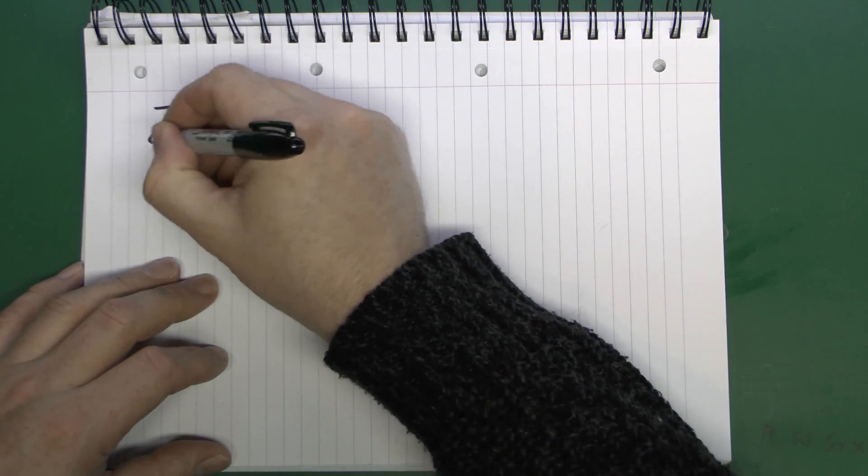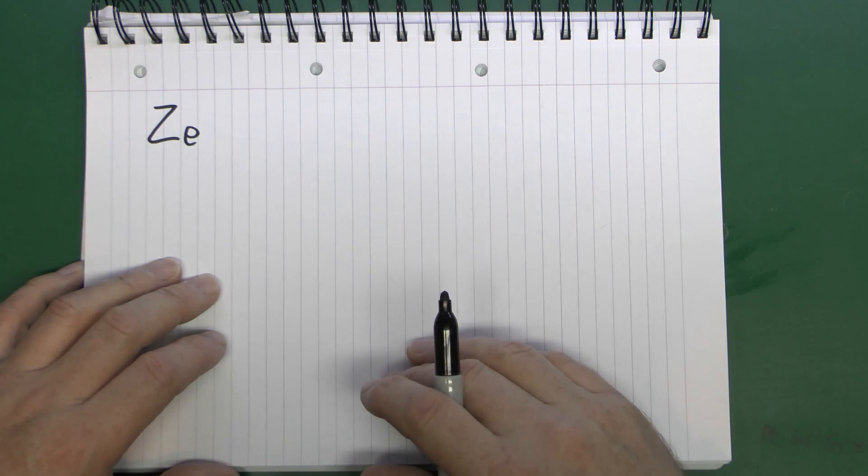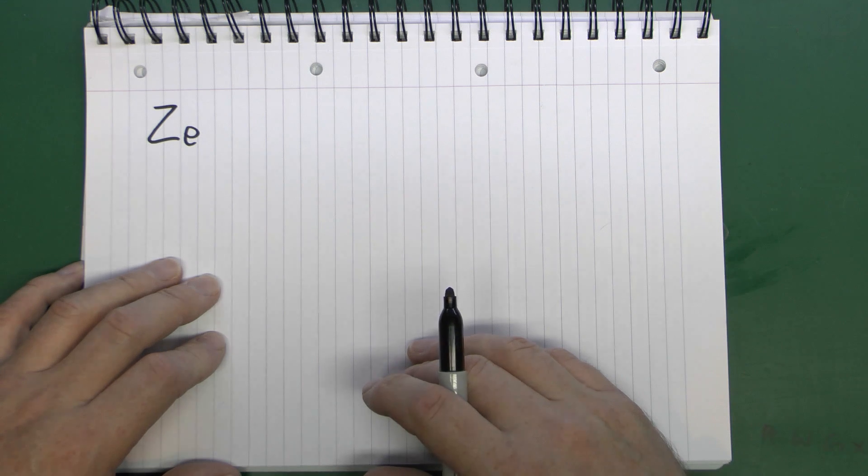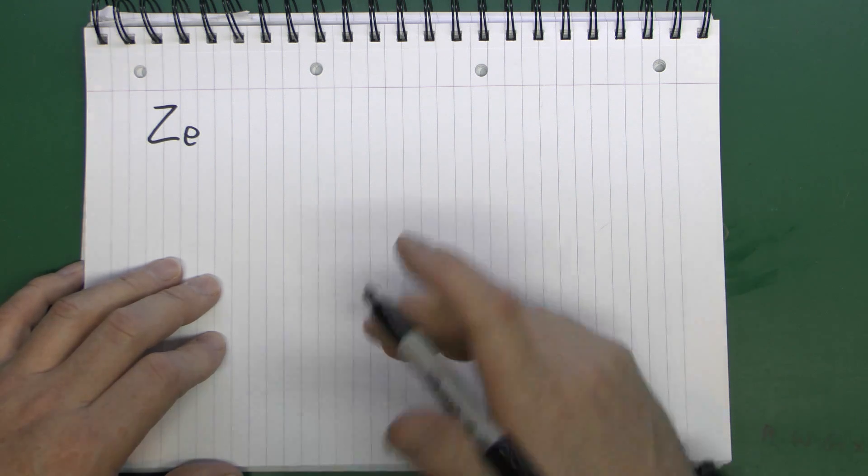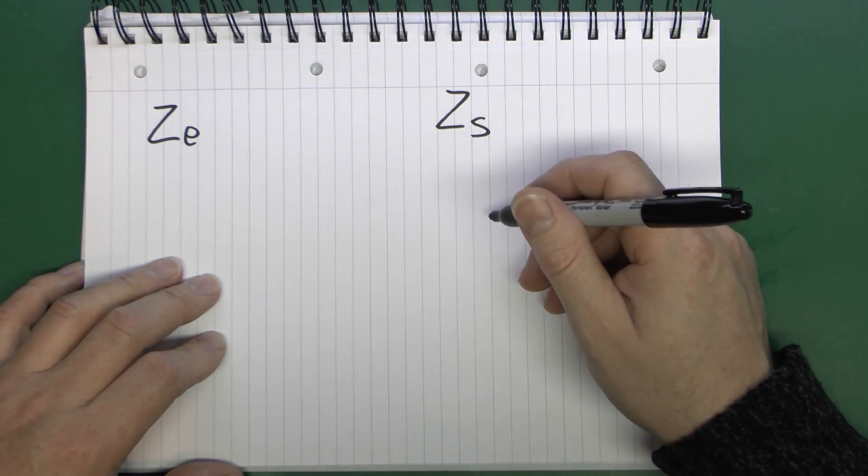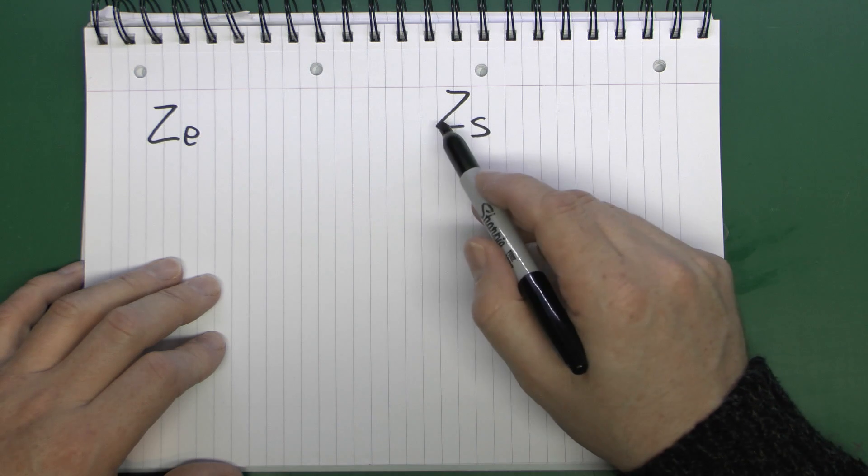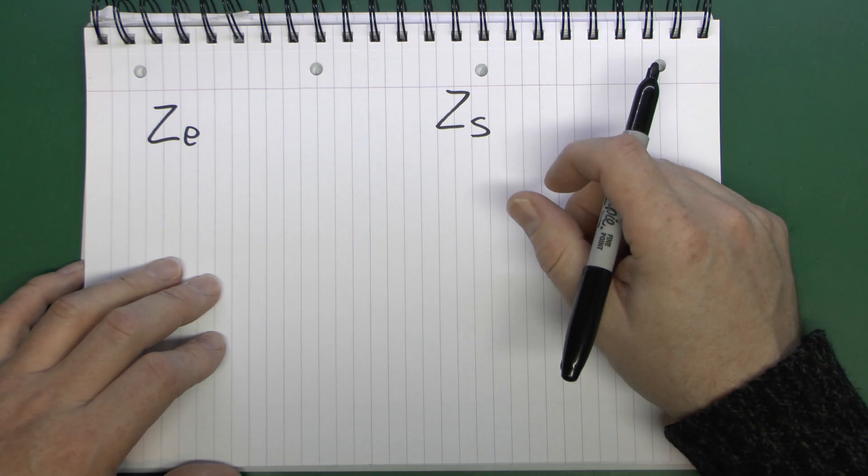Now in the case of this test we're actually concerned with the external earth fault loop impedance and this is typically given the symbol Z for impedance and then E and E for external. So this is purely the effectiveness of the earth connection being provided to the building and does not involve the circuits within the building at all. You can test the circuits inside the building, that would be given the symbol ZS, which is done at the end of each circuit. It's just the resistance of the circuit wiring added to the external loop impedance.